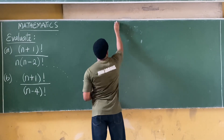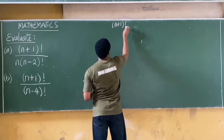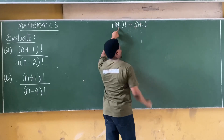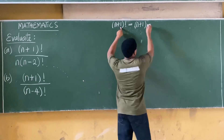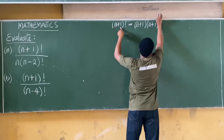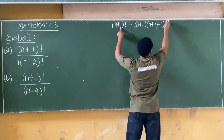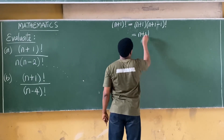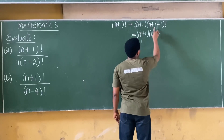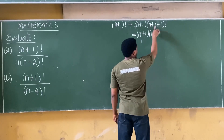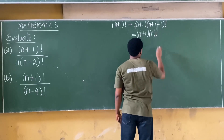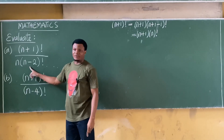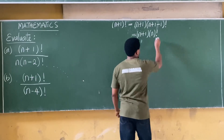n+1 factorial is simply equal to n+1, then we subtract one from this to get n+1-1, which gives us n+1 into n factorial. We are looking for n-2 factorial, so we'll keep reducing. That gives us n+1 into n factorial.